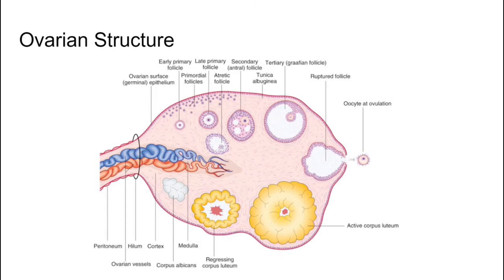Looking at the ovarian structure in a pre-menopausal person who's still ovulating — you'll see these on scan images. You have early follicles that get bigger, become tertiary follicles, then rupture every month as ovulation occurs. Once the egg's been released, the cyst changes into what we call a corpus luteum. If not pregnant, it regresses; if pregnant, it persists with a good blood supply and releases hormones to support the pregnancy. These structures are visible macroscopically on ultrasound.